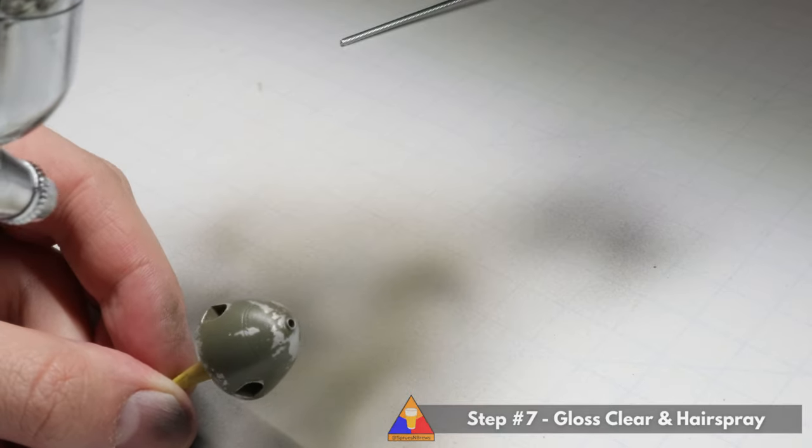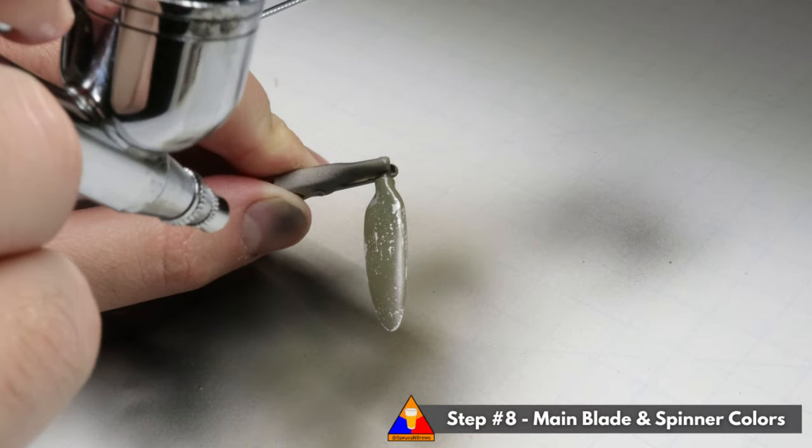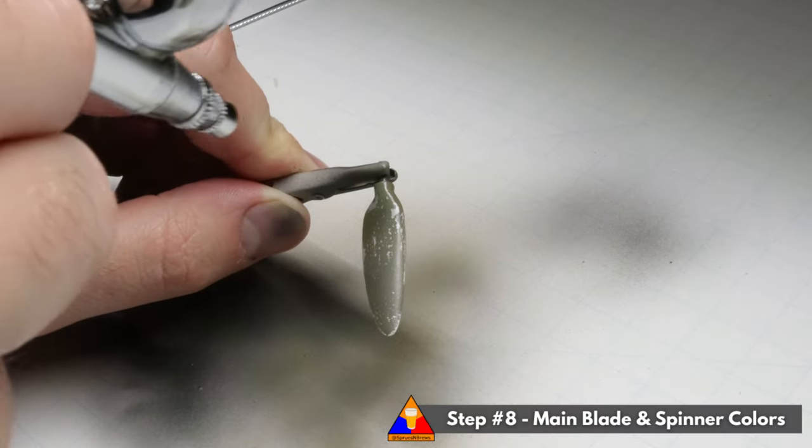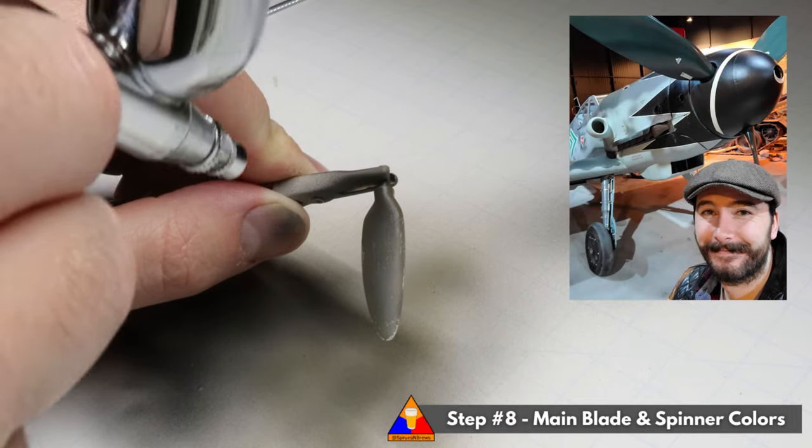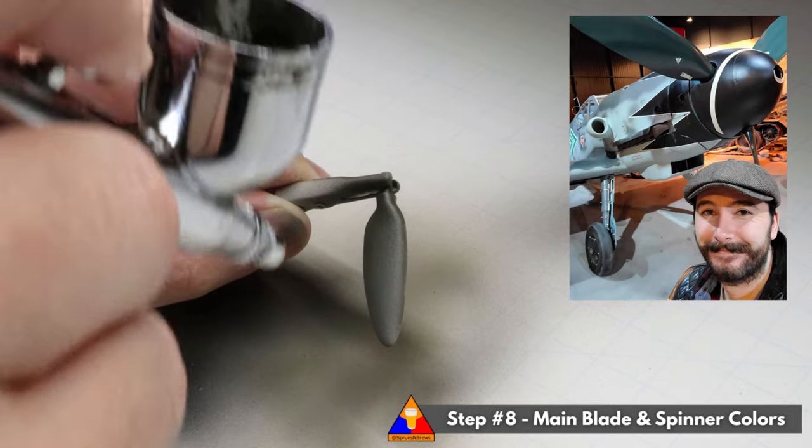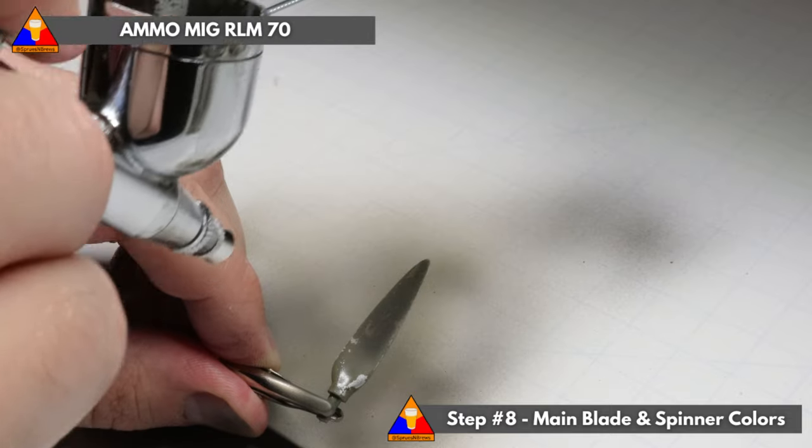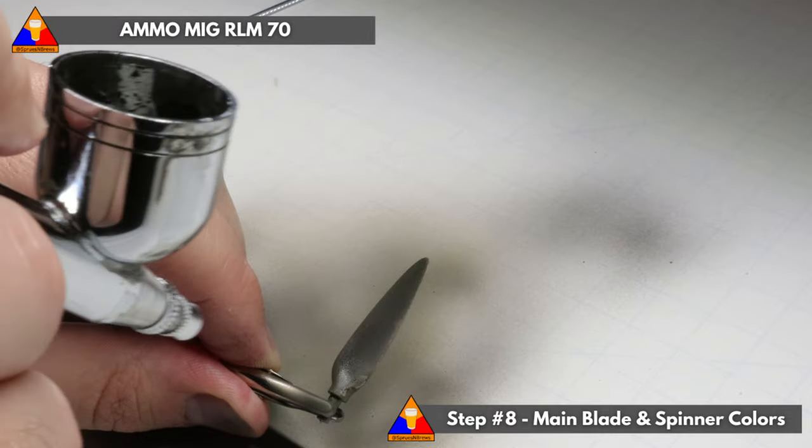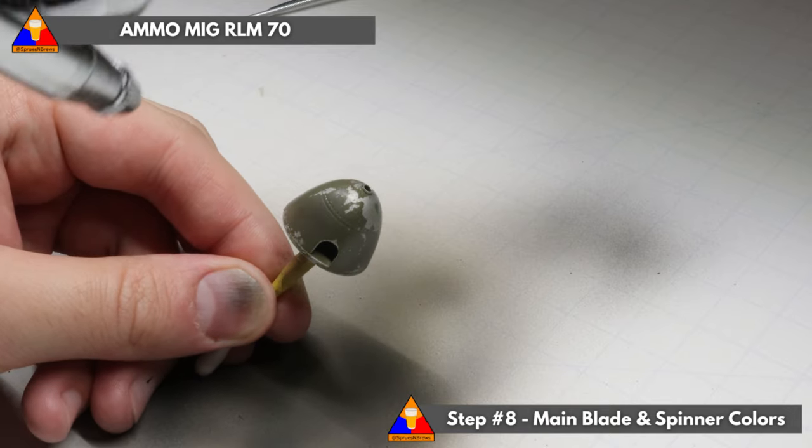Once that's dry, we're going to spray our prop blades with RLM 70 Schwarzgrun, which is a nice deep black green. If you look at Luftwaffe fighters, the prop blades aren't proper flat black, they're actually this deep green color. Again, if you're doing an aircraft of another nation, be sure to confirm your prop colors. And our spinner is going to be flat black, nice and simple.